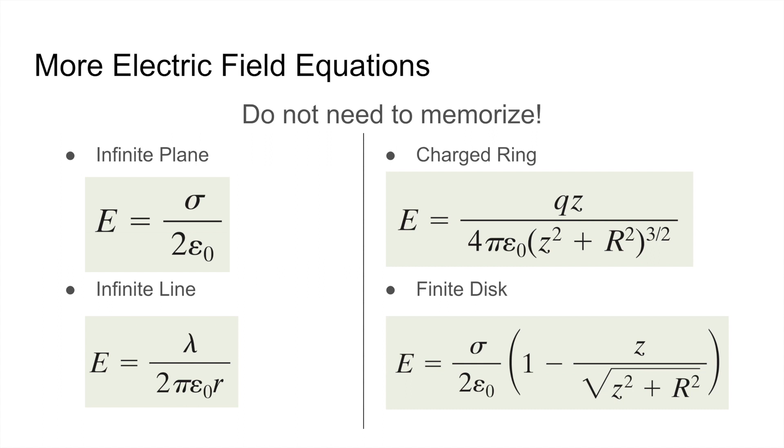The electric field given by a charged ring and a finite disk—you have to use integration. I'm not going to read these electric field equations out, but basically z is the distance from point P to the center of the ring or disk that we're measuring from, r is the radius of the disk, q is the charge of the charged ring, and sigma is the surface charge density again.